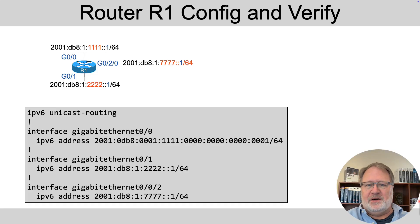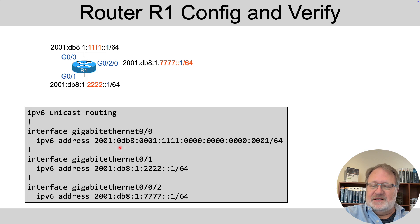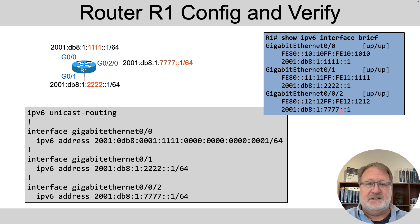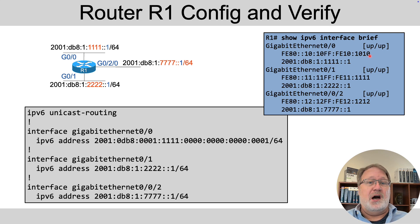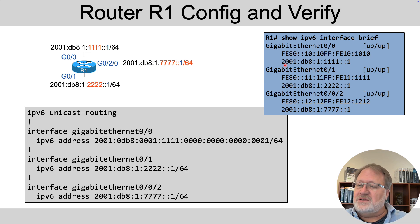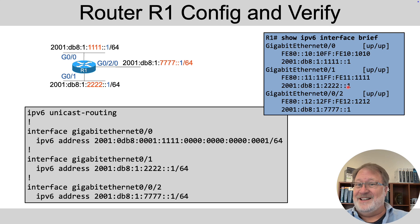Now let's dig into the command line interface. Here's a review of router R1's configuration. Each interface has global unicast addresses, so the show IPv6 interface brief command will list those global unicast addresses — the second of the two addresses shown. This command also lists the link local addresses. Link local addresses do not form subnets or prefixes — there's no subnet for which the router needs to add connected routes associated with link local addresses. But the global unicast addresses that start with 2 will imply a subnet, and those are the ones for which you'll see connected routes show up.